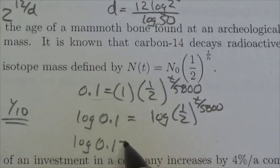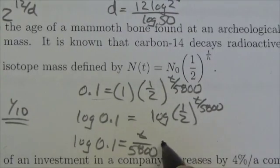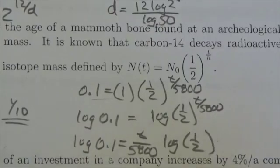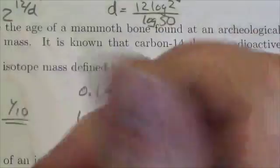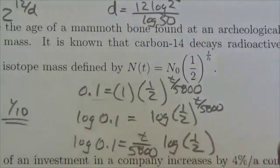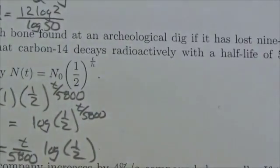So I get the log of 0.1 is equal to t over 5,800 times the log of a half. Now I'm looking to get t by itself, so I'm gonna multiply by the 5,800 and divide by the log of a half.